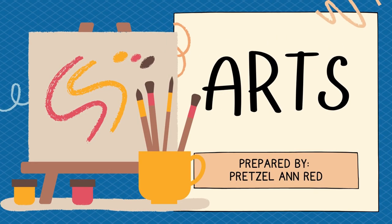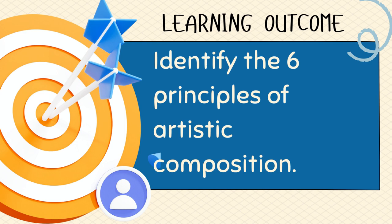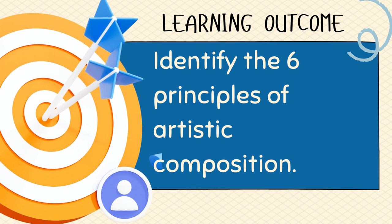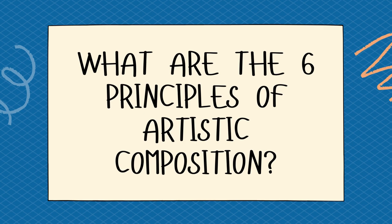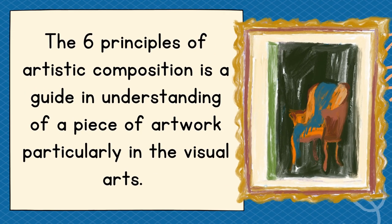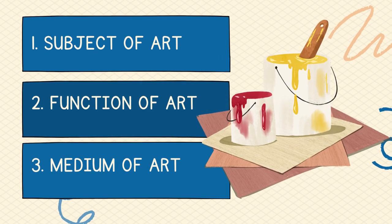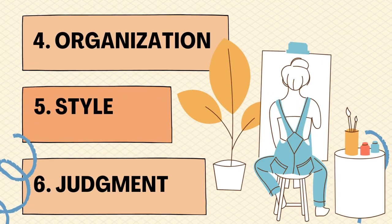Hello everyone, Miss Red here. This time we are going to talk about the different principles of artistic composition. After this video discussion, you will be able to identify the six principles of artistic composition. The six principles of artistic composition are: first, the subject of art; second, the function of art; third, the medium of art; fourth, the organization; fifth, the style; and sixth, the judgment.